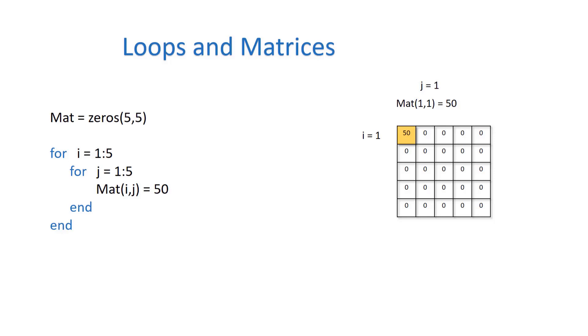First, the value of i is 1, then it enters the next statement where j is 1, then it enters the action which is mat of 1 comma 1 equals 50. Next, j becomes 2, and mat of 1 comma 2 is changed to 50. This repeats for j equal to 4 and 5 as well. The entire first row is done executing.